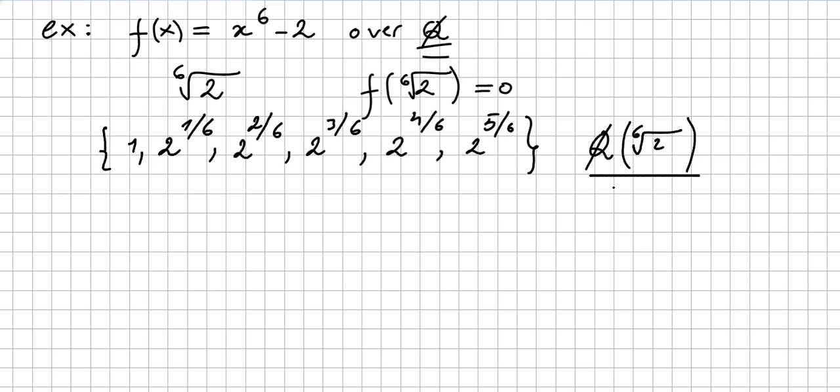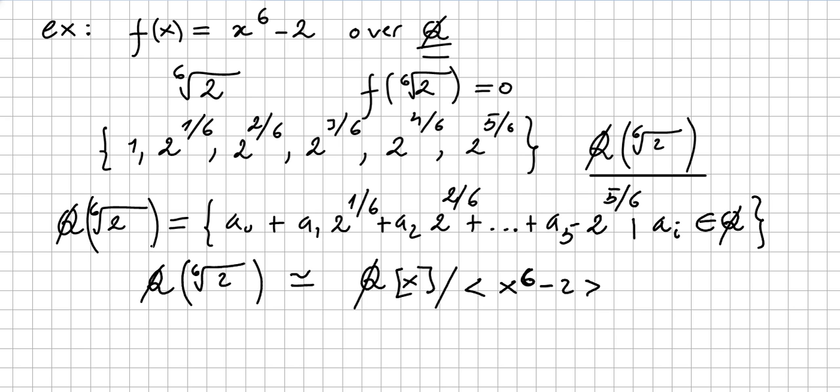So we can write this field this way, with a_0 times 1, a_1 times 2^(1/6), a_2 times 2^(2/6), and so on. All these a_i will be in the rationals, obviously.